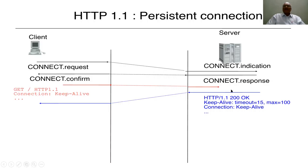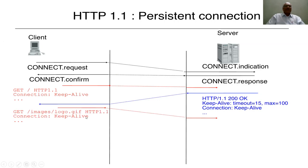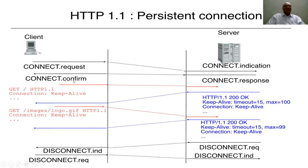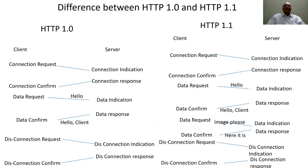The requested data is indicated at the server, and the server gives a response saying the data is available with HTTP 1.1 status 200 — indicating success, that the requested information is available. A timeout value indicates how long the connection should be kept alive. During that period the same connection is reused for another request — for example, a second request for an image. The server confirms it is available, and the connection stays alive for further requests. Once all requests are completed, a disconnect request comes from the client and is confirmed by the server.